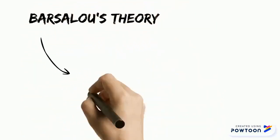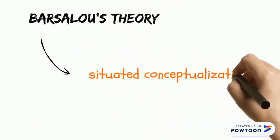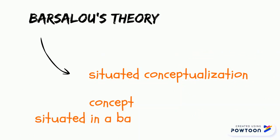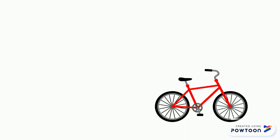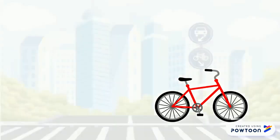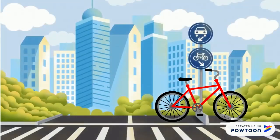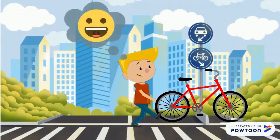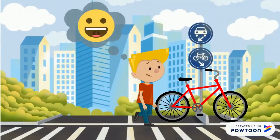According to Barsalou's theory, what you're imagining is defined as a situated conceptualization. This means that whenever we think of a concept like a red bike, it appears as situated in a background or context. For example, when you think of the red bicycle, you're also picturing a setting, a relevant person involved, and the way he or she feels in that particular situation.